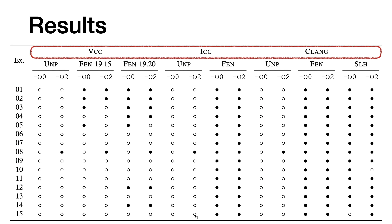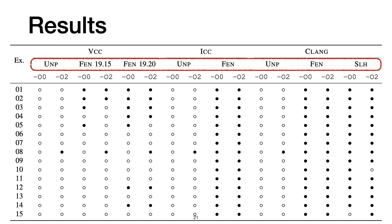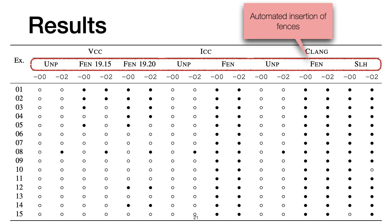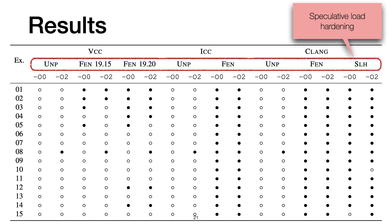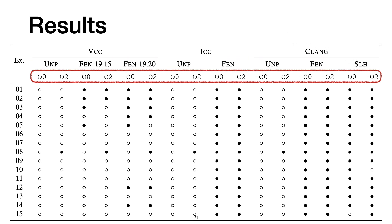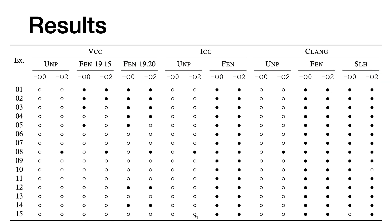VCC stands for the Microsoft compiler, ICC is the Intel compiler, and Clang is obviously the Clang compiler. We compiled the programs without countermeasures, with the automated insertion of fences, and for the Clang compiler, with a countermeasure called speculative load-hardening. We also used two different optimization levels, giving us 240 small programs overall. A black dot in the table means that Spectator proved that the program satisfies speculative non-interference, while a white dot means that Spectator successfully detected the leak.